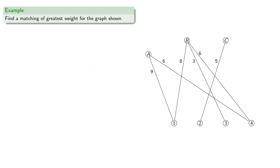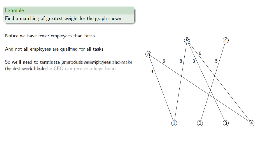For example, let's try to find a matching of greatest weight for the graph shown. And notice we have fewer employees than tasks, and not all employees are qualified for all tasks. So we'll need to hire an additional employee, but for which task?